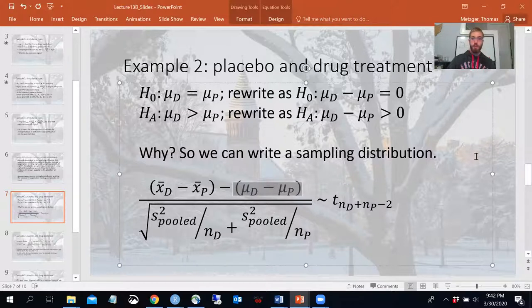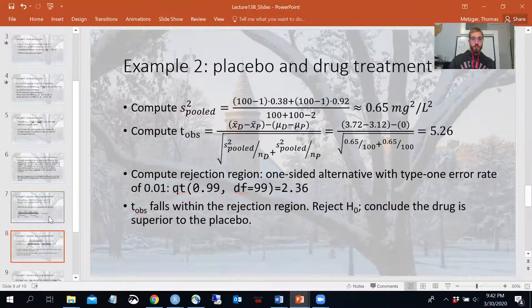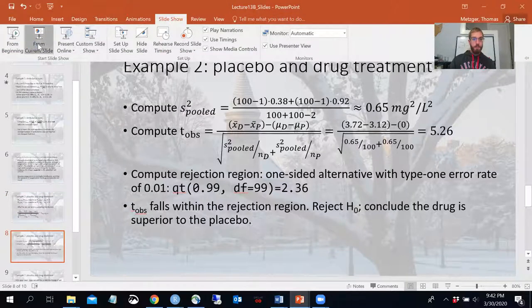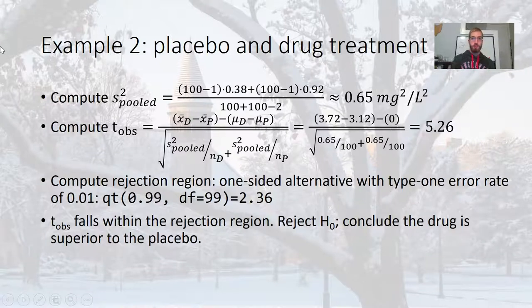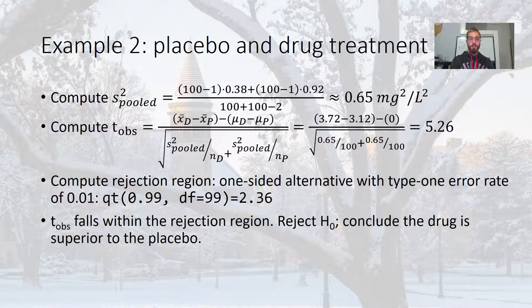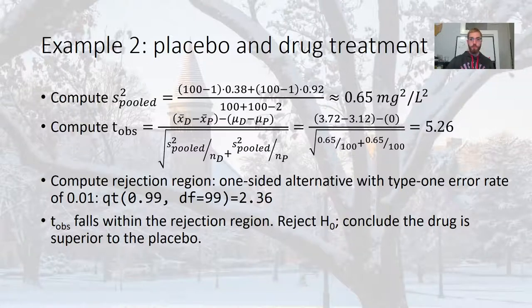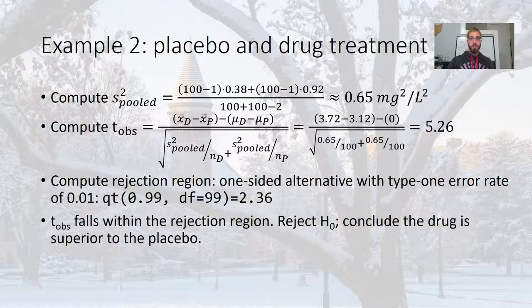So then I can do a little bit of arithmetic and compute the pooled variance. And so that's just a formula to plug some things in. So that's the arithmetic that you get for the pooled variance. And then your T statistic, so 0.65 milligrams squared per liter squared is my estimate of the variance sigma squared. Remember, because I'm assuming the variances are equal for the drug and the placebo, I only have one estimate of the variance. That's why I use the pool here. Then my observed T statistic. I can plug in values for all these things. X bar D and X bar P were 3.72 and 3.12 respectively. That was given to you in the problem. Mu D minus mu P is zero. That's what got plugged in over here then. And then my pooled variance was 0.65 divided by 100 each in the placebo group and the drug group. So we get 5.26 for our T observed.